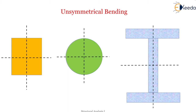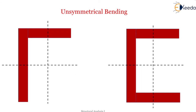There are two reasons for unsymmetrical bending. First, the section is symmetrical about two axes, like a rectangular or circular section, but the load line is inclined to both principal axes. Second, the section itself is unsymmetrical, like angle and channel sections with a vertical web, and the load line is along the vertical centroidal axis.